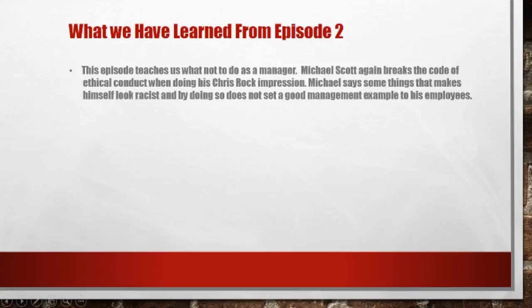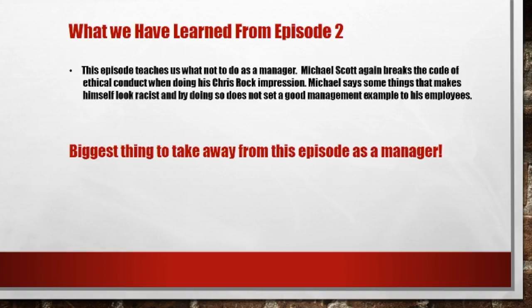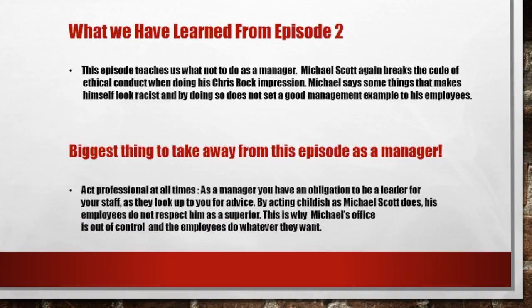This episode teaches us what not to do as a manager. Michael Scott again breaks a code of ethical conduct when he does his Chris Rock impression, saying things that make himself look racist. By doing so, it does not set a good management example for his employees. The biggest takeaway from this episode: act professional at all times. As a manager, you have the obligation to be a leader for your staff. By acting childish, as Michael Scott does, his employees do not respect him as a superior, which is why his office is out of control.